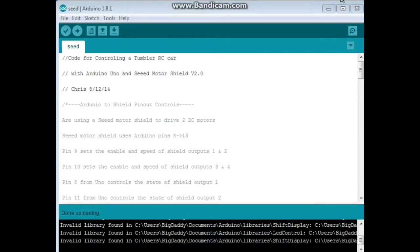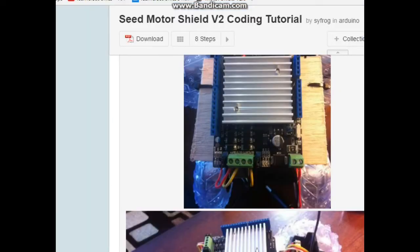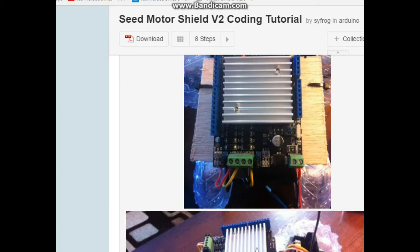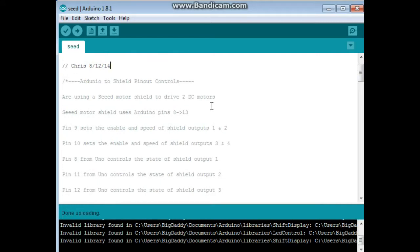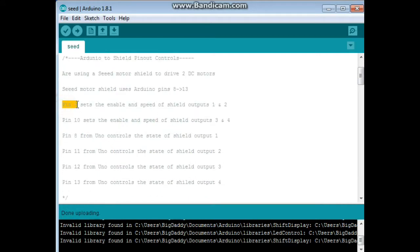Alright, here is the sample code for driving these motors. And I found it on Instructables by a guy named Cisfrog. So, let's go and just look through this real quick. Pin 9 sets enable and speed outputs for motor 1. Pin 10 does the same thing for motor 2. Pin 8 controls the state of output 1, output 2. So, these are for motor 1. So, this will be one direction. This will be the other direction. It will either be high or low. Then pin 12 and pin 13 do the same for motor 2. Whether it's high or low will be forward or backward.